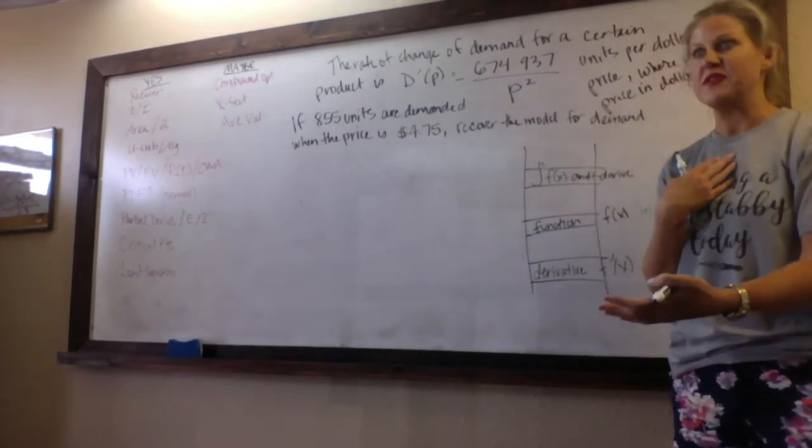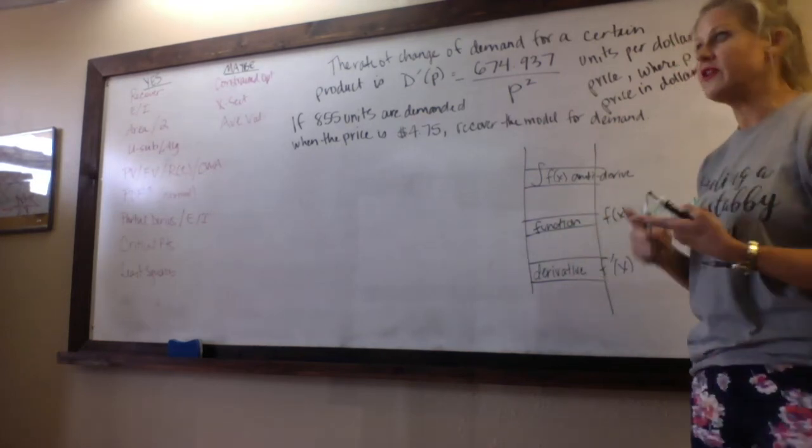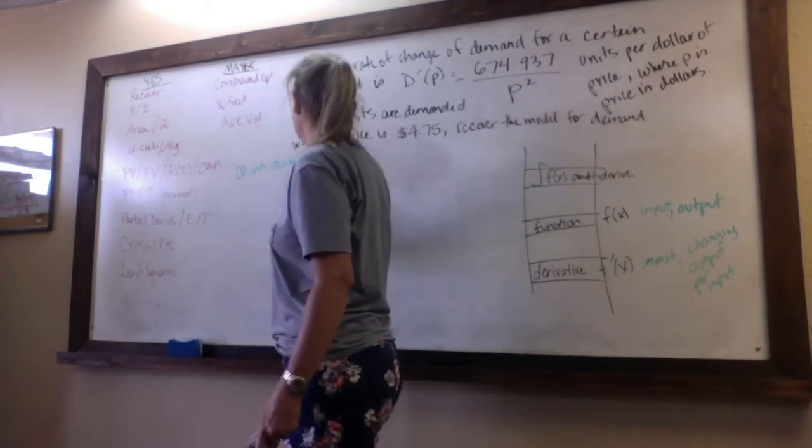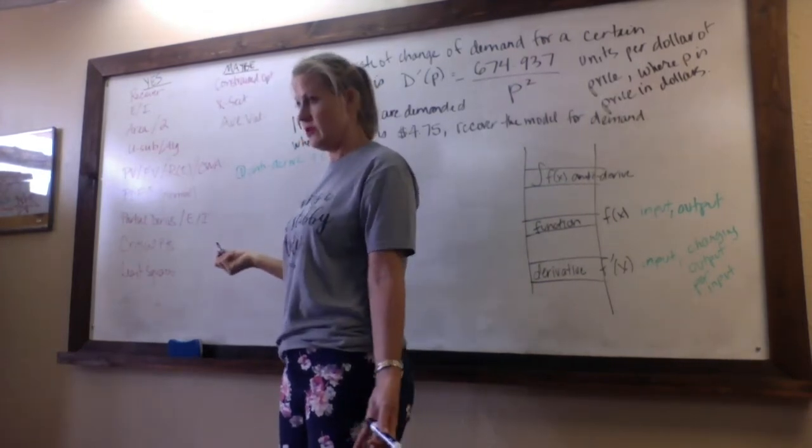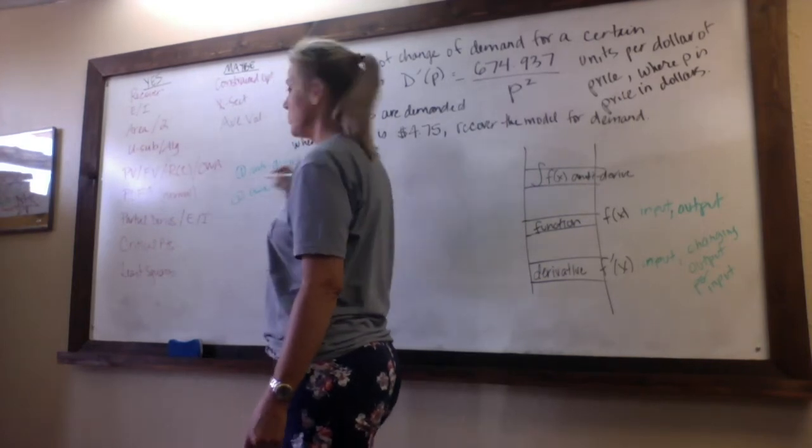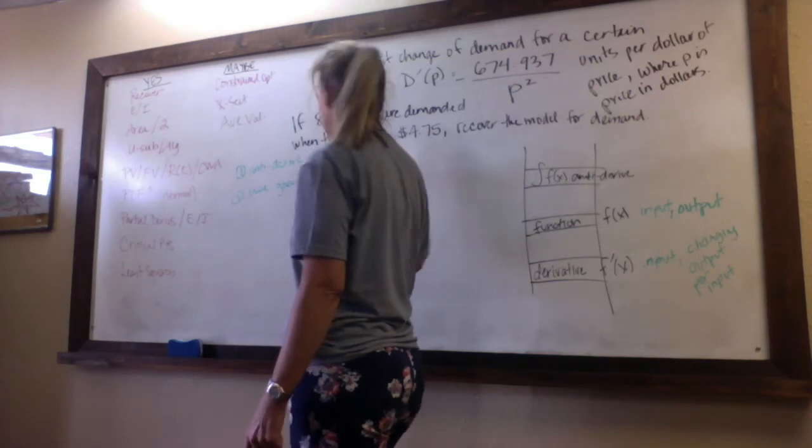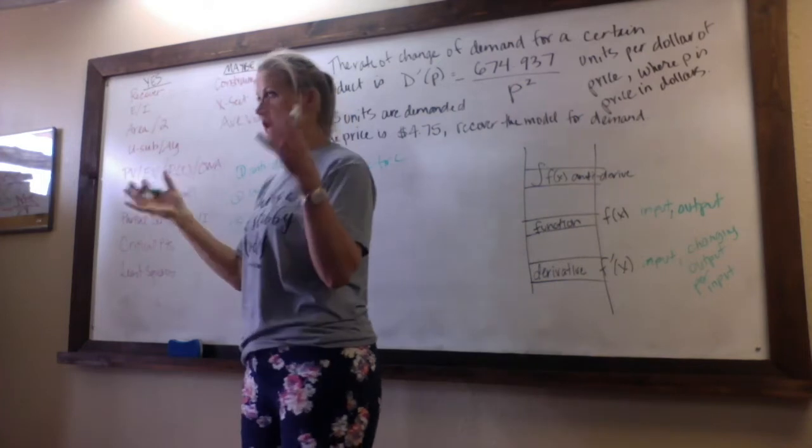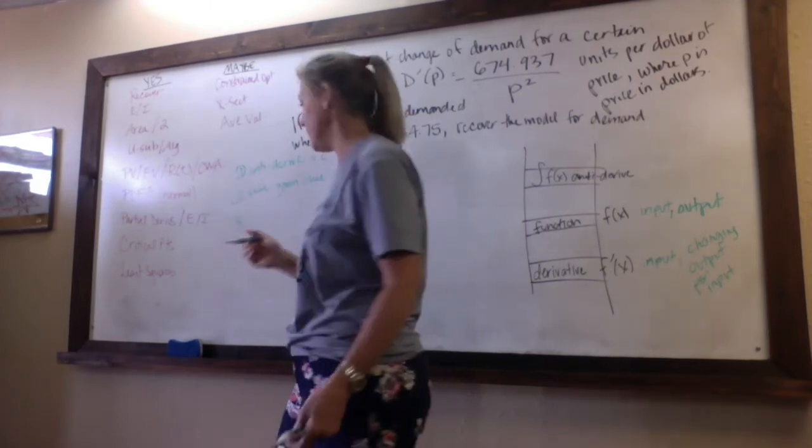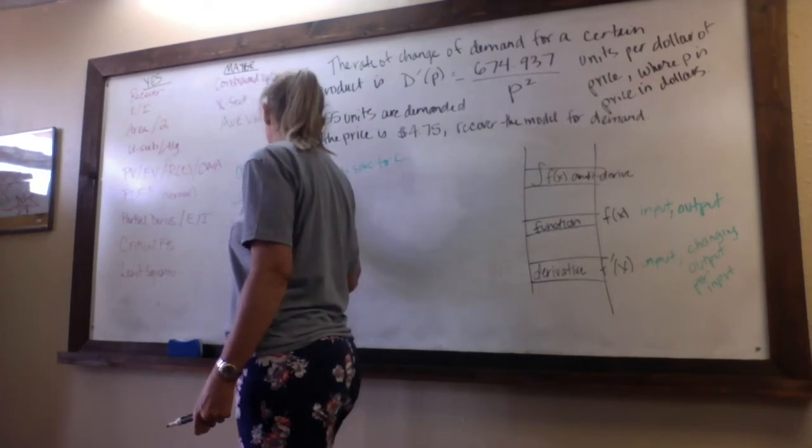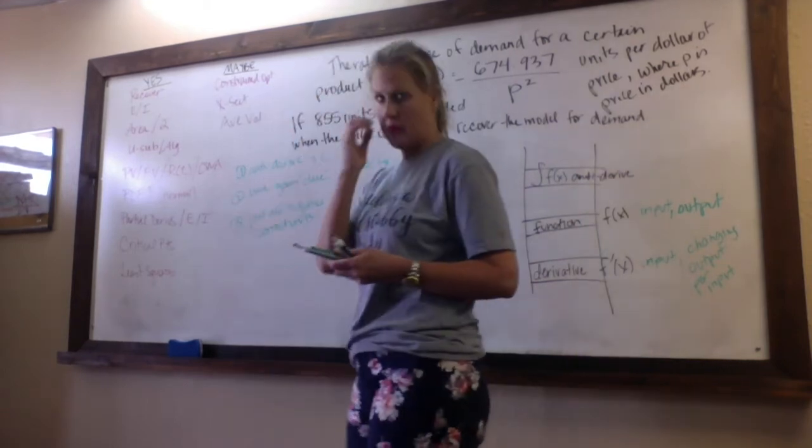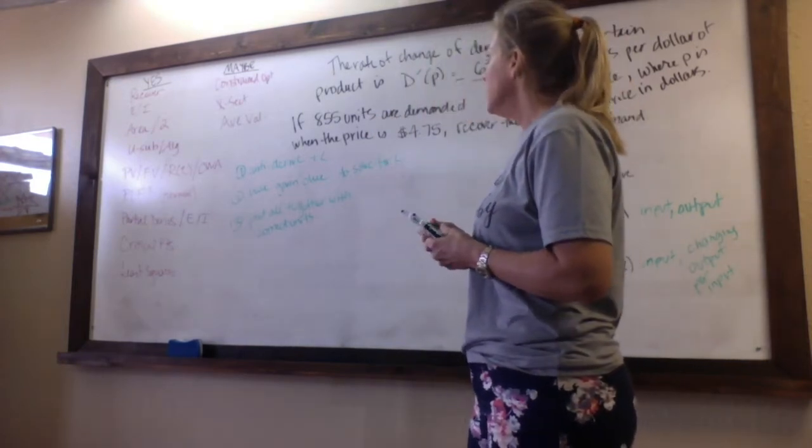The way you do that is a very stepwise procedure. You're going to anti-derive and put plus C on the end of it, then you're going to use the little given clue which will always be given to solve for C, and then your final answer is you have to put everything all together into one complete recovered model, which is with the correct units and all that stuff.